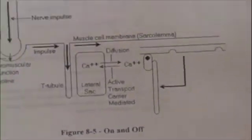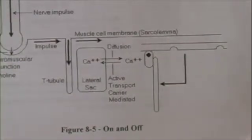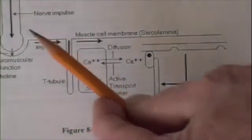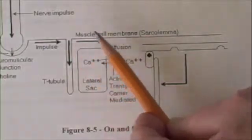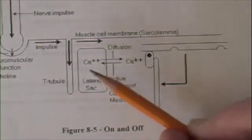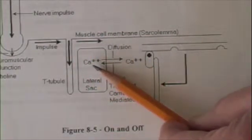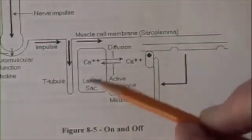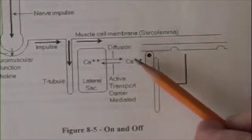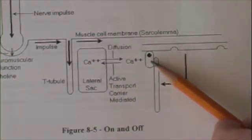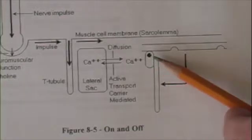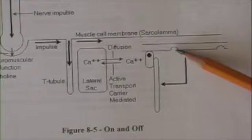So the signal for contraction of a muscle is the nerve impulse. It reaches the muscle cell. The impulse causes the release of calcium from the lateral sac. The calcium binds to the calcium binding site on the troponin, uncovering the binding site, and the muscle contracts.